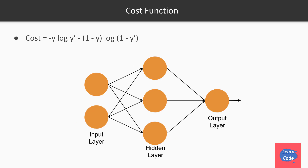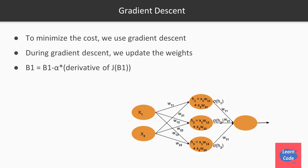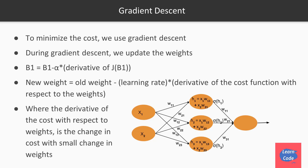Now let's look at the cost function for a neural network. The cost function for a neural network is the same as logistic regression. To minimize the cost, we use gradient descent. During gradient descent, we update the weights: w1_new = w1_old minus the learning rate times the derivative of the cost function J with respect to the weights, where that derivative represents the change in cost with a small change in the weights.